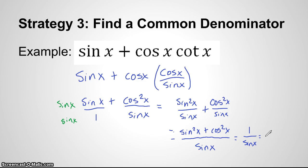Sine squared plus cosine squared is one and one over sine x. I'm not going to make this mistake again. One over sine is cosecant. Cosecant x. So there's our answer there. So again, we want to find a common denominator here when we have a fraction. Okay, that is strategy three, find a common denominator.